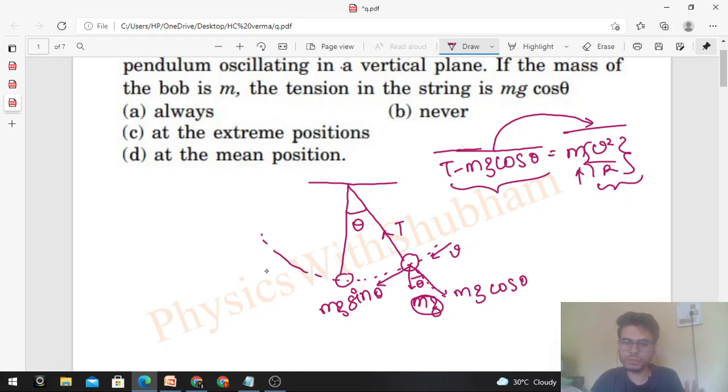If you are looking at the tangential direction, that will be equal to mass times tangential acceleration. Now tangential acceleration you can write as dv